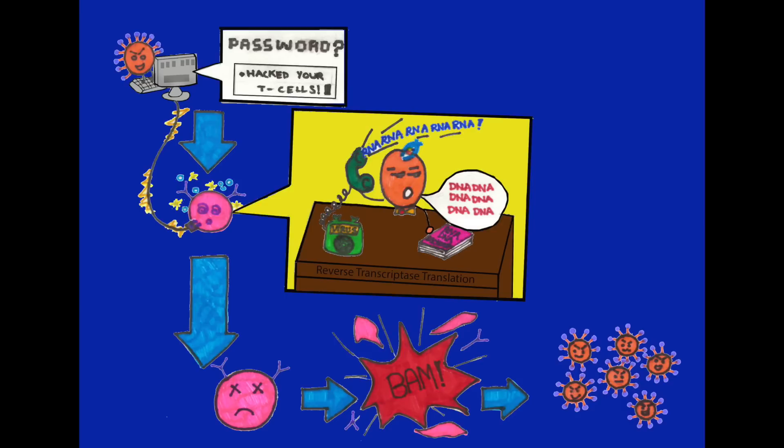An enzyme called reverse transcriptase, acting like a translator, changes the genetic material of the virus so it can be integrated into the host's DNA. The virus's new genetic material enters the nucleus of the host cell and uses an enzyme called integrase to integrate itself into the host's own genetic material, where it may hide and stay inactive for several years. When the host cell becomes activated, the virus uses the host's enzymes to create more genetic material. A special enzyme called protease cuts the longer HIV proteins into individual proteins. When these come together with the virus's genetic material, a new virus is assembled, and it pushes itself out of the host cell, killing it and taking part of the cell membrane with it.